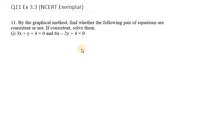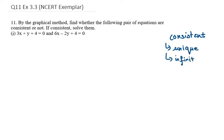Hello everyone. Let's start with question number 11. Here we need to find whether the following pair of equations are consistent or not, and if consistent, solve them. A system is consistent when we have a unique solution or infinitely many solutions. It is inconsistent when we get no solution.